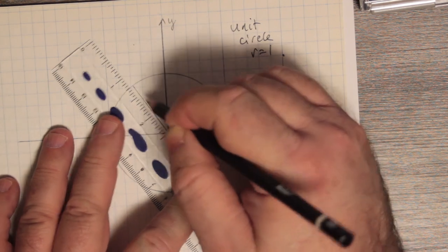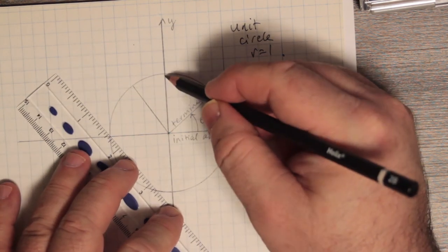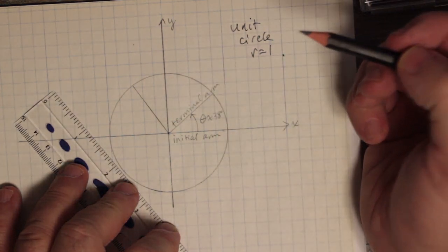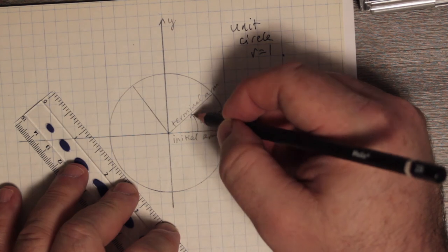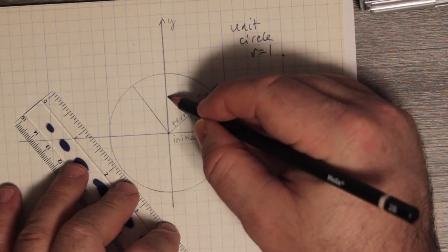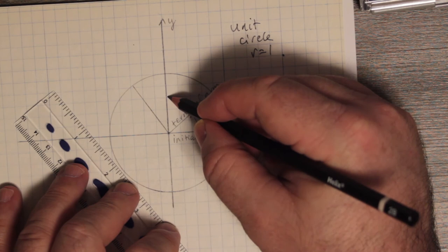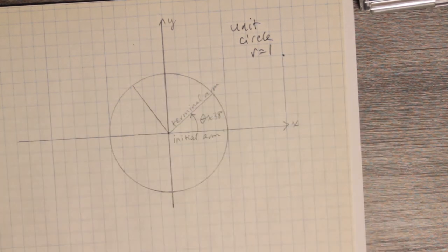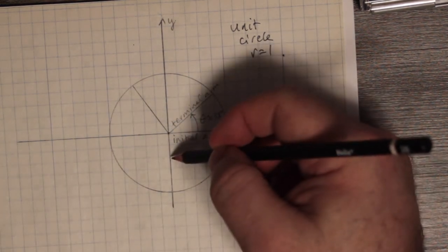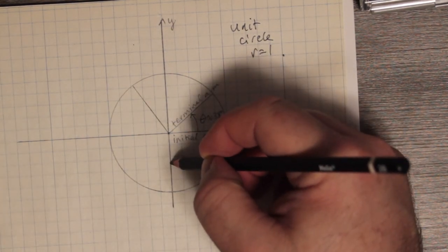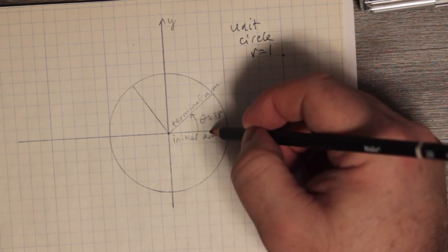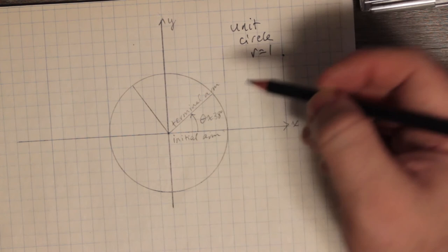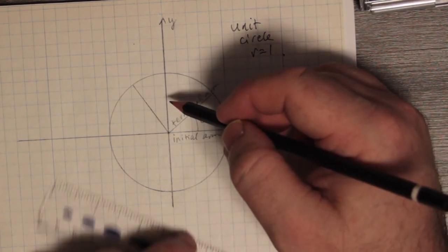Let's try an angle greater than 90 degrees. You know that over here this positive y-axis represents an angle of 90 degrees, because you're measuring from the initial arm counterclockwise and when you go 90 degrees you hit the y-axis. And when you go 180 degrees you're hitting the negative x-axis, 270 degrees you're hitting the negative y-axis, and then 360 degrees you're back where you started. It goes in a counterclockwise fashion.